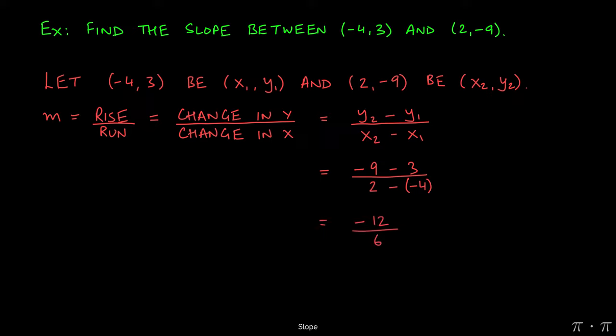Now if we distribute the negative, the negative times a negative will give a positive, and 2 plus 4 will give us 6. Negative 9 minus 3 yields negative 12. And if we reduce this fraction, we get that our slope is negative 2.